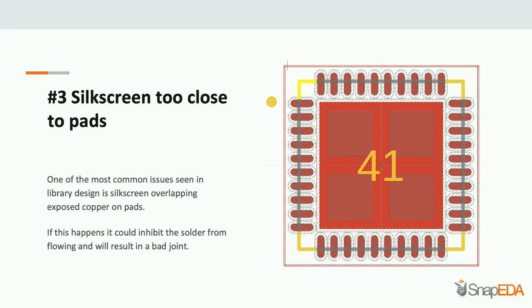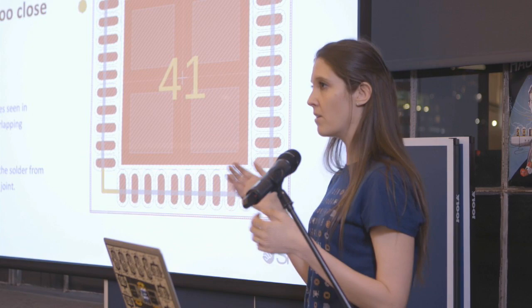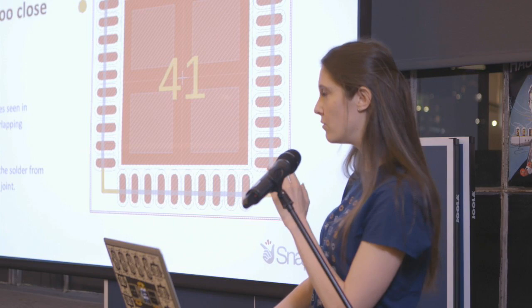Number three: silkscreen too close to pads. If there's silkscreen overlapping the copper, it will cause bad solder joints. IPC specifies a clearance to maintain, so this is something to watch for. This is definitely an error I see with a lot of new engineers. I have heard that a lot of PCB manufacturers will take away the silkscreen — that's something they know to do — but it's still something to watch to ensure high-quality libraries.